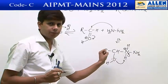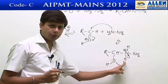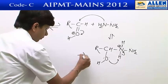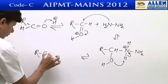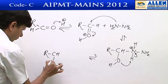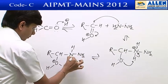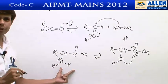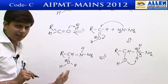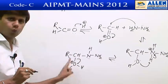The protonated nitrogen atom releases a hydrogen atom in the form of a proton, and that proton gets attached to the oxygen atom, giving a new species in which the oxygen atom becomes positively charged. This positively charged oxygen atom gets neutralized by withdrawing electrons from the carbon atom and gets released in the form of water.